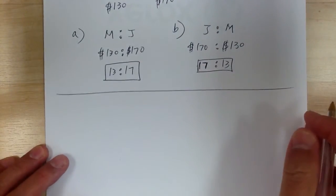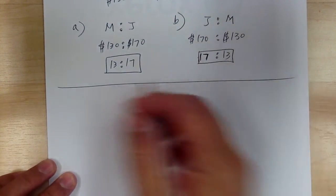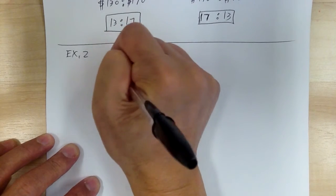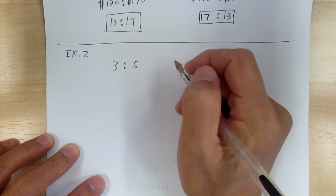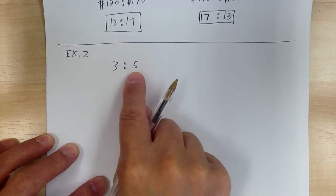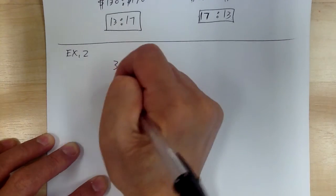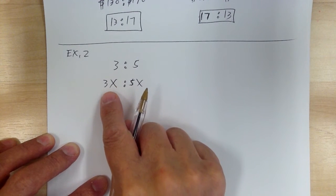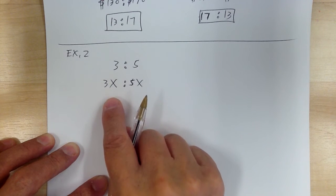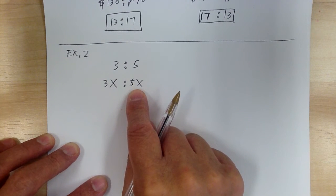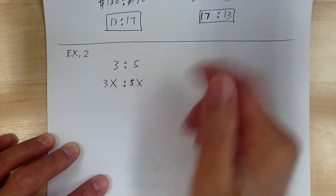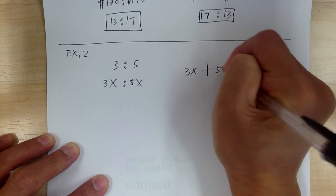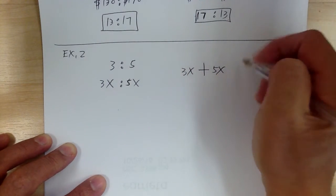Let's go to example 2 to see how to find the multiplier. Two numbers are in a ratio of 3 to 5. As soon as you have a ratio and you're looking for the original number, you need to put in a multiplier, making it 3x to 5x. So x is the multiplier. The first number is 3x, the second number is 5x. The sum of the two numbers is 32, so you add them together.